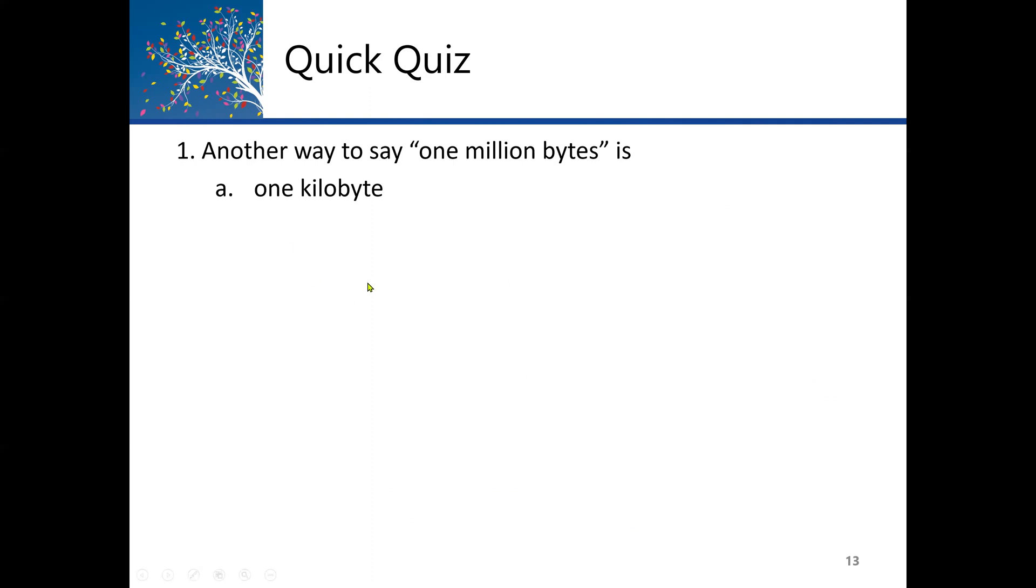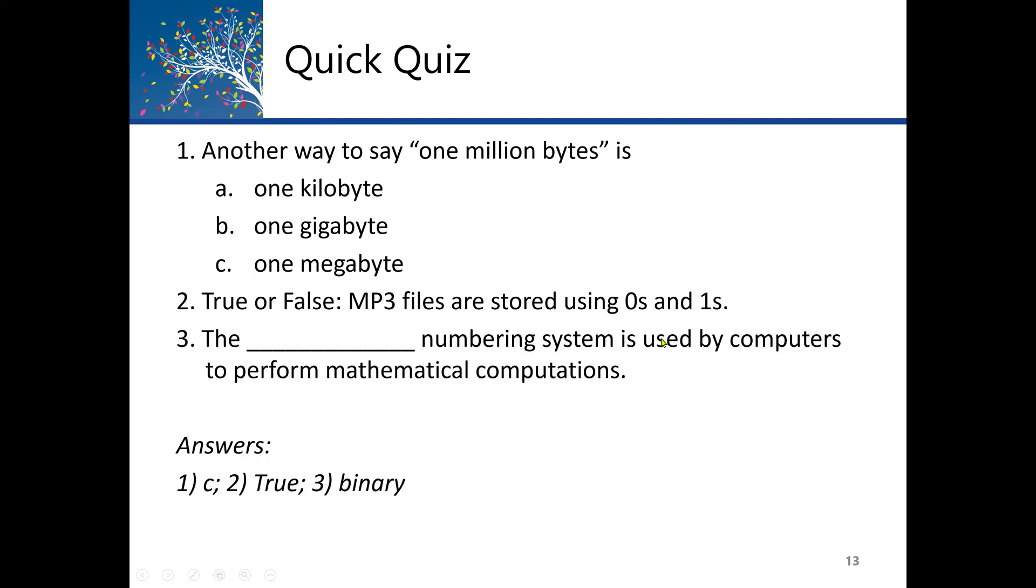What is another way to say one million bytes? Here we say kilobytes, gigabytes, or megabytes. The correct answer will be one megabyte, which is one million bytes. One gigabyte is one billion. One kilobyte is one thousand. True or false: MP3 files are stored using zeros and ones. The first answer is C, one megabyte. And for the question, MP3 files are stored using zeros and ones, that is true. It must be understood by the computer in digital form. A binary number system is used by computers to perform mathematical computations.